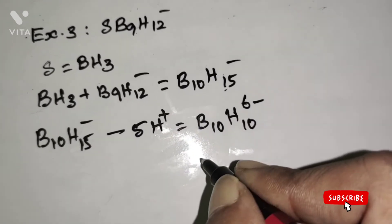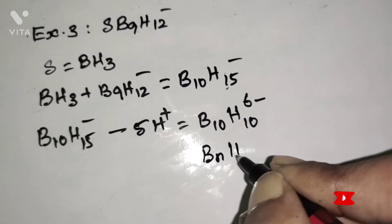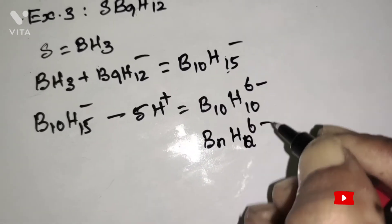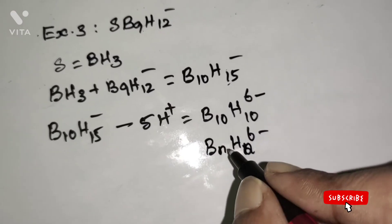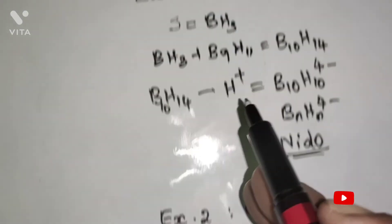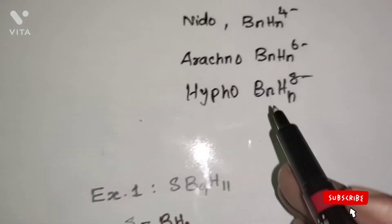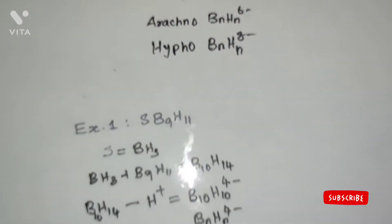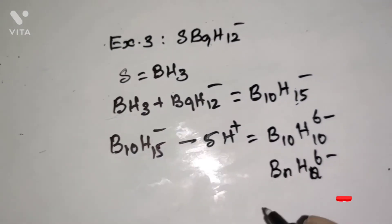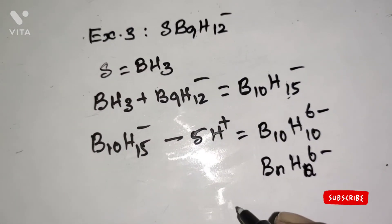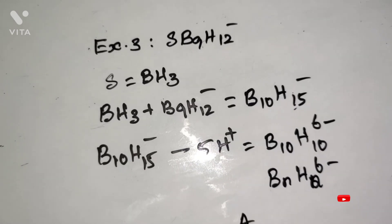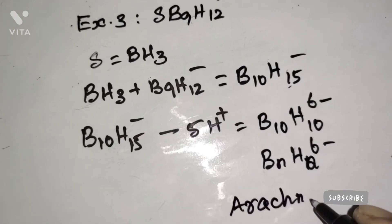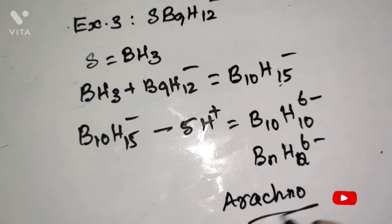Therefore, 5 + 1 = 6−. This formula is also written as [BnHn]⁶⁻. [BnHn]⁶⁻ is an arachno type of cluster. Therefore, SB9H12⁻ is an arachno type of cluster.